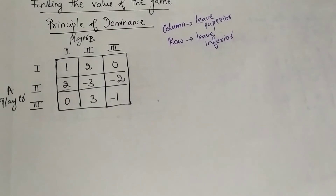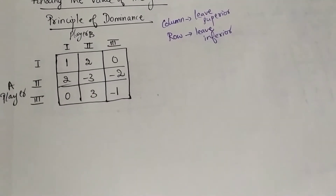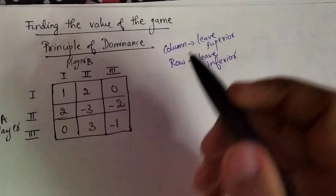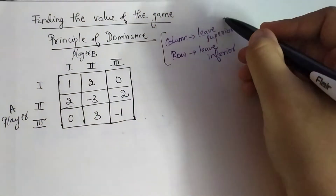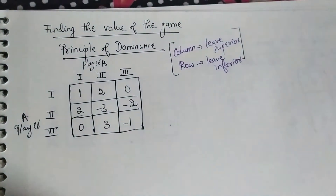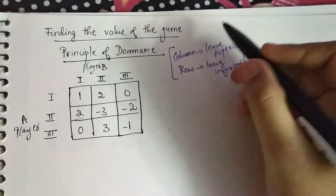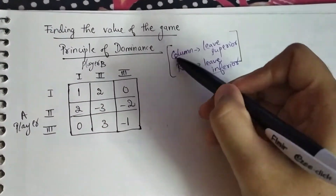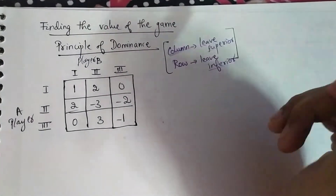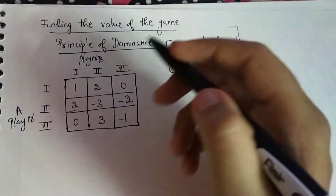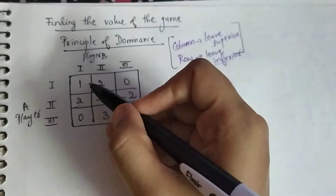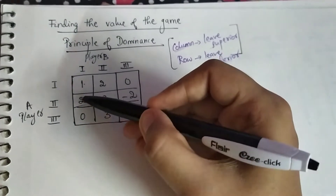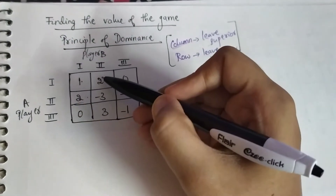I've written the clue for this problem, which is very much needed. When it comes to a row, you leave out the inferior one. When it comes to a column, you leave out the superior one. To solve this, consider the first two rows.